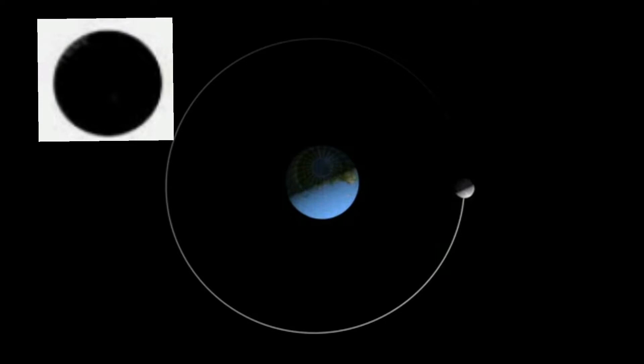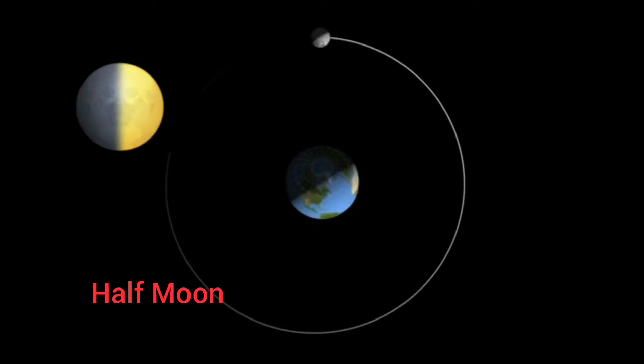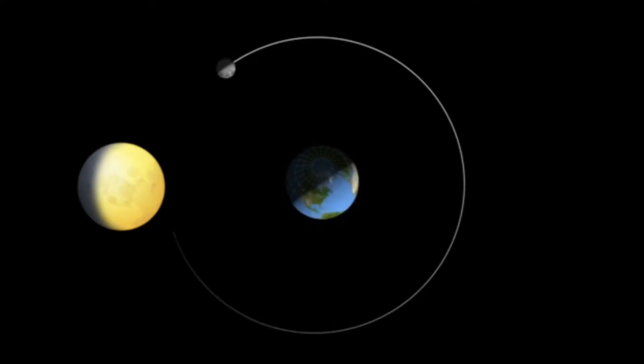The first stage is new moon. The dark side of the moon is facing the earth, and that's why we cannot see the moon. Second stage is crescent moon. A small section of the moon's surface that is lit up by the sunlight is facing the earth. Then, half moon. A half section of the moon's surface that is lit up by the sunlight is facing the earth. After that, gibbous moon. A large section of the moon's surface that is lit up by the sunlight is facing the earth.